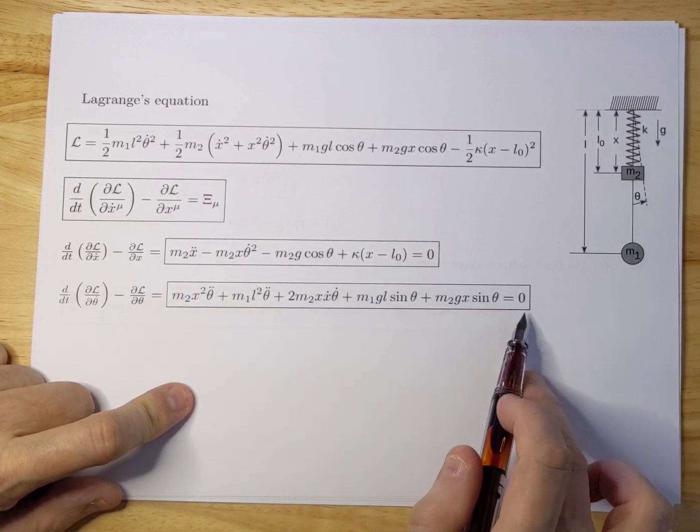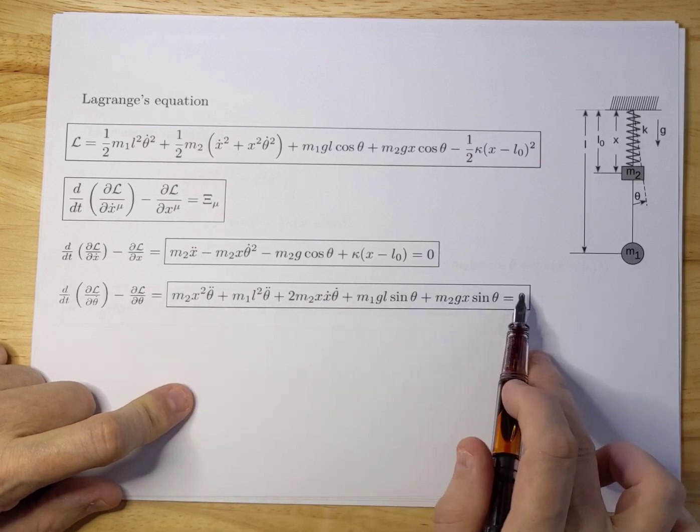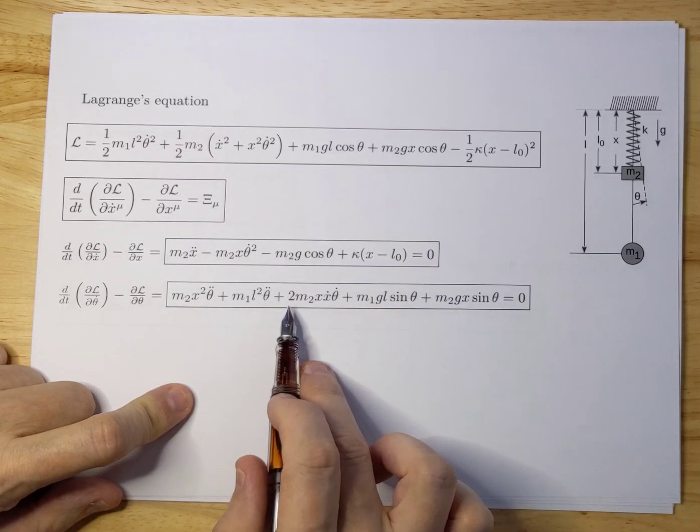Now you do something similar for theta and that gives you the second equation of motion. So now we have two equations of motion.